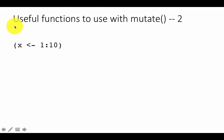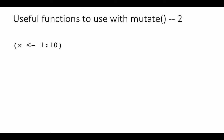Why put parentheses around the assignment? If you just say x is assigned the value of 1 colon 10, the result will be silent — the value will get assigned to x but you will not see what got assigned, nothing will print on the console. If you want something to print on the console, you can use this neat trick of surrounding it with parentheses — it will do the job and also print it out.